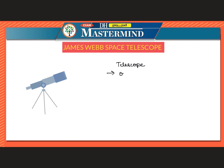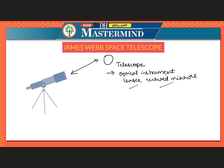A telescope is an optical instrument — remember, this is a keyword — using lenses, curved mirrors, or a combination of both to observe distant objects. Various devices are used to observe distant objects by their emission of electromagnetic radiation, through absorption, emission, or reflection, allowing us to derive information about the body being observed.